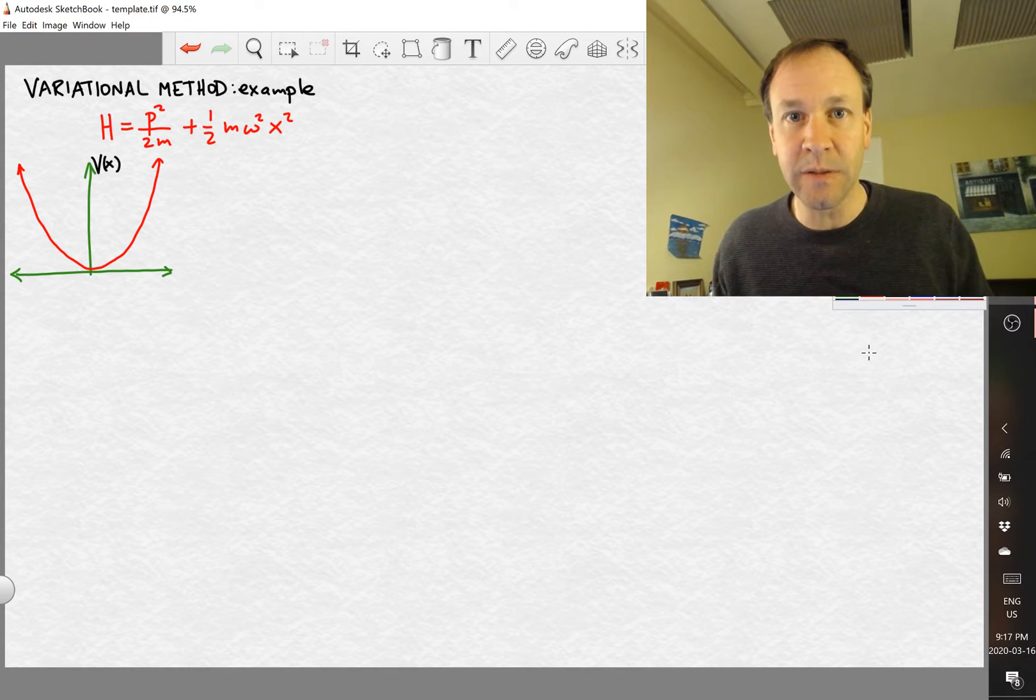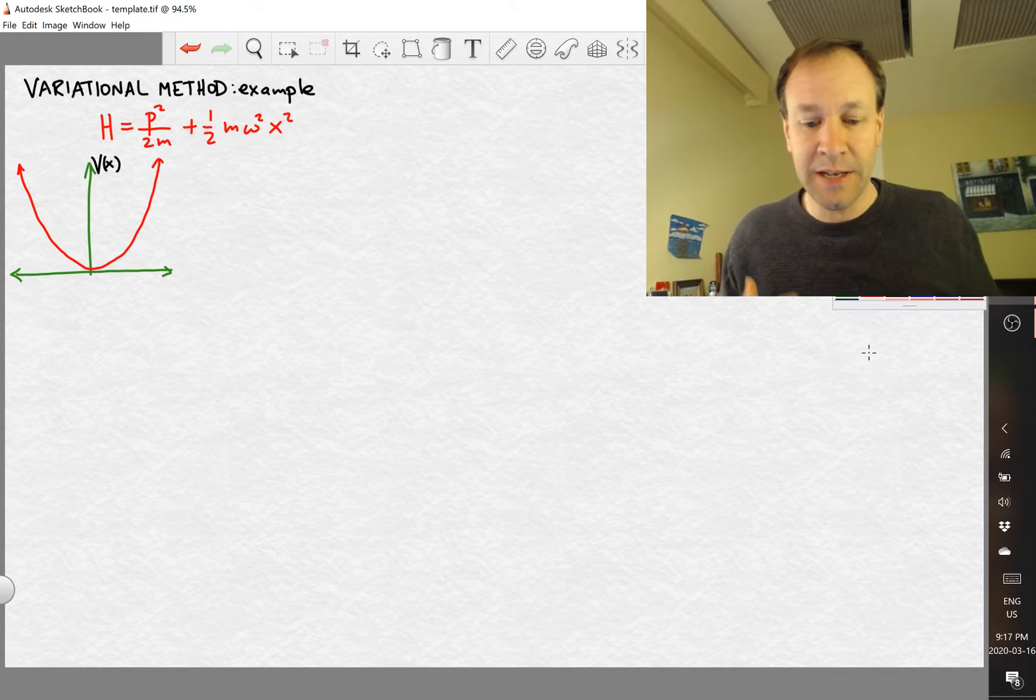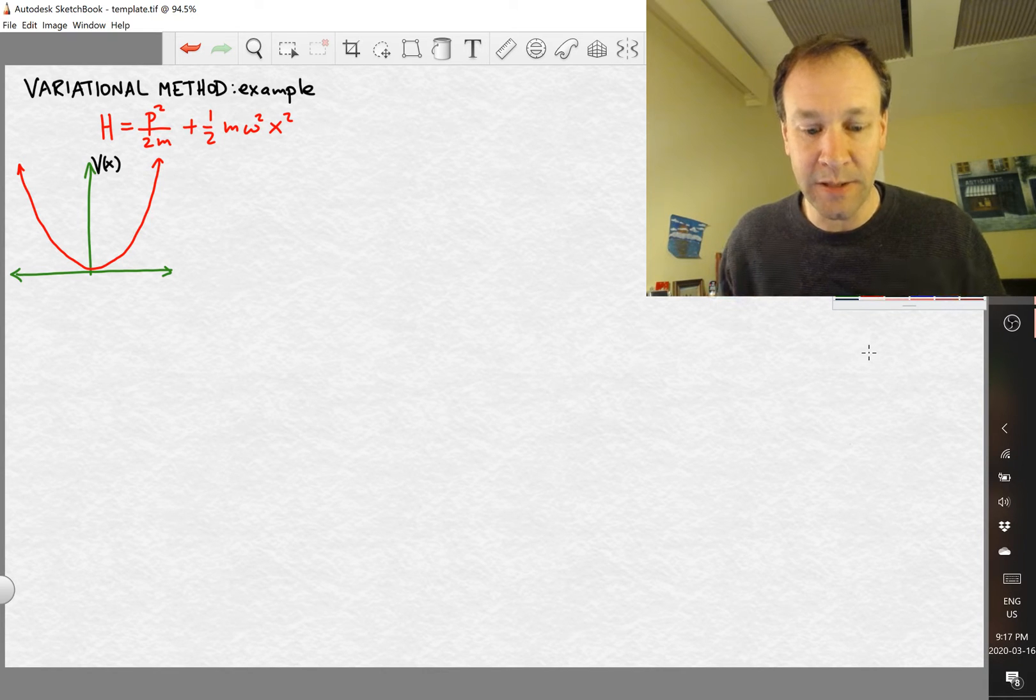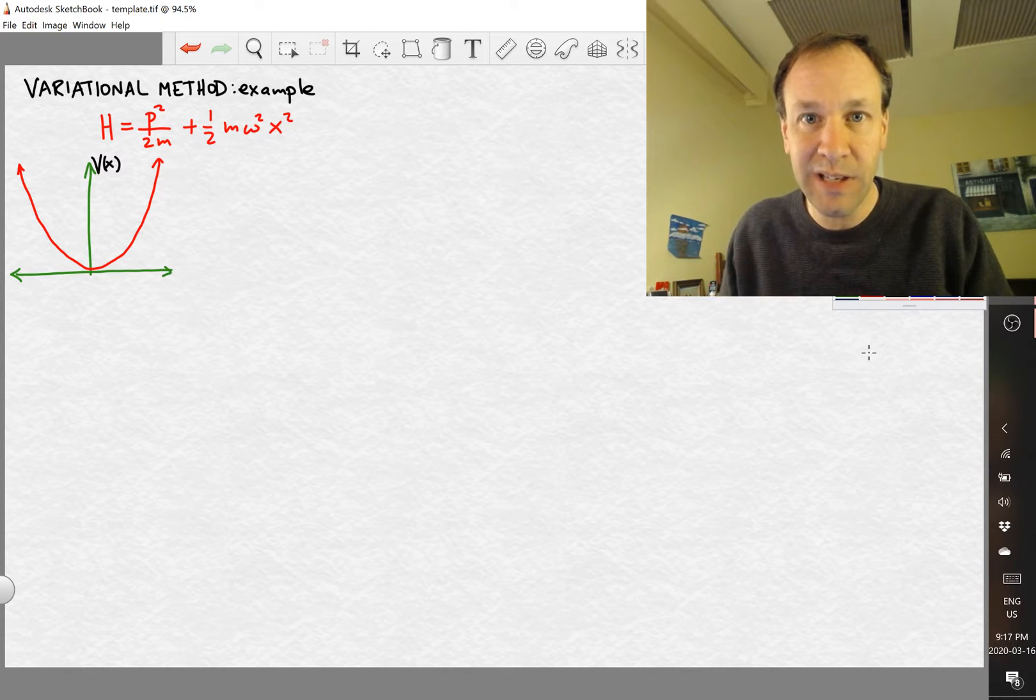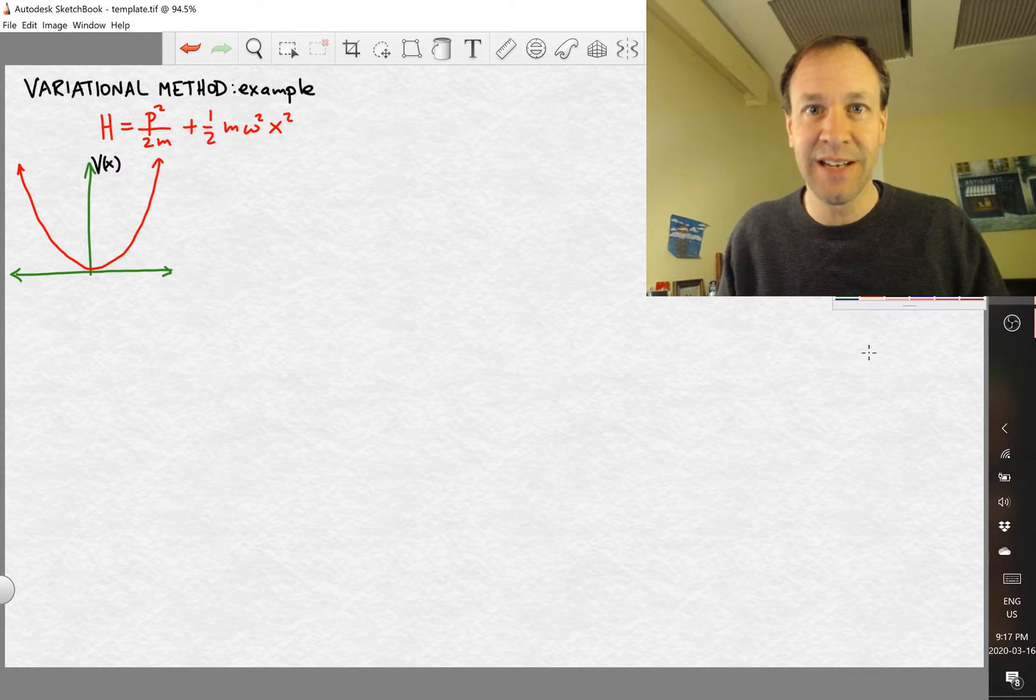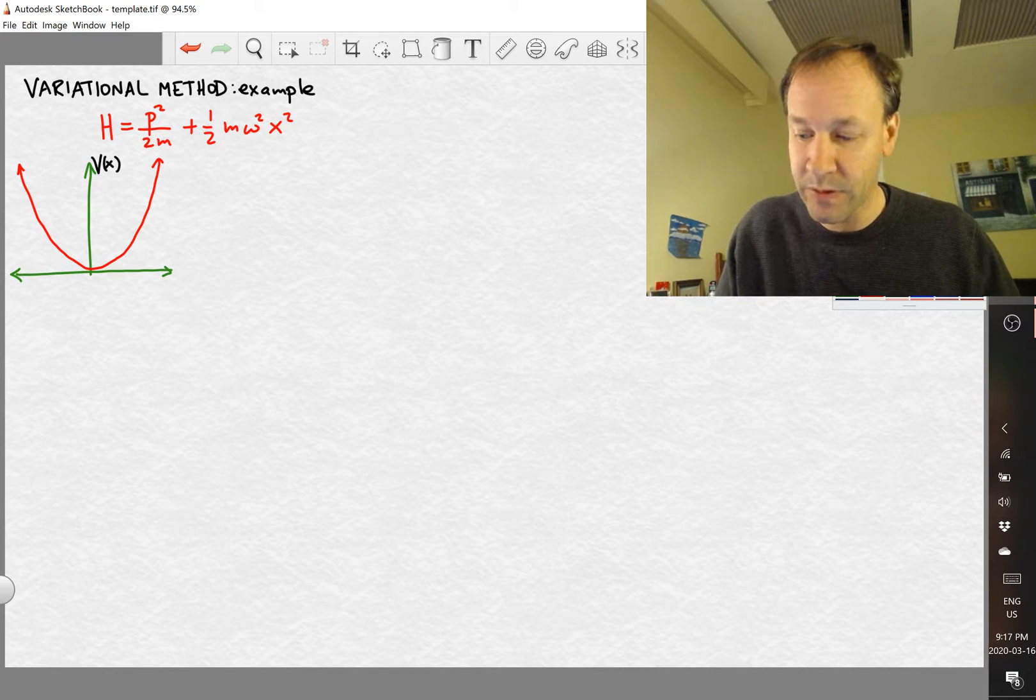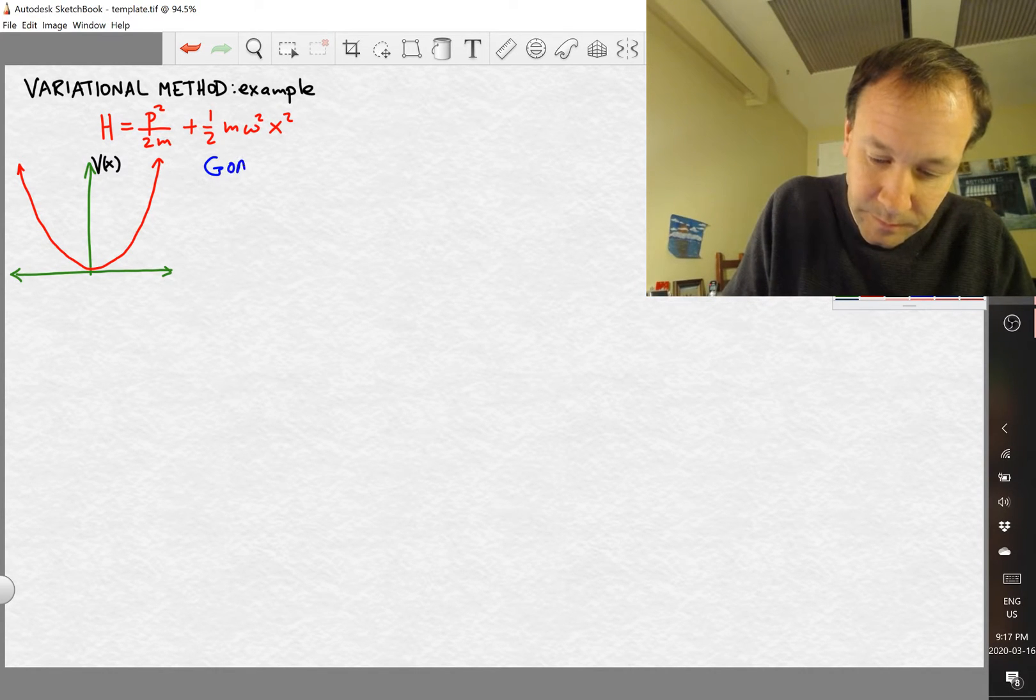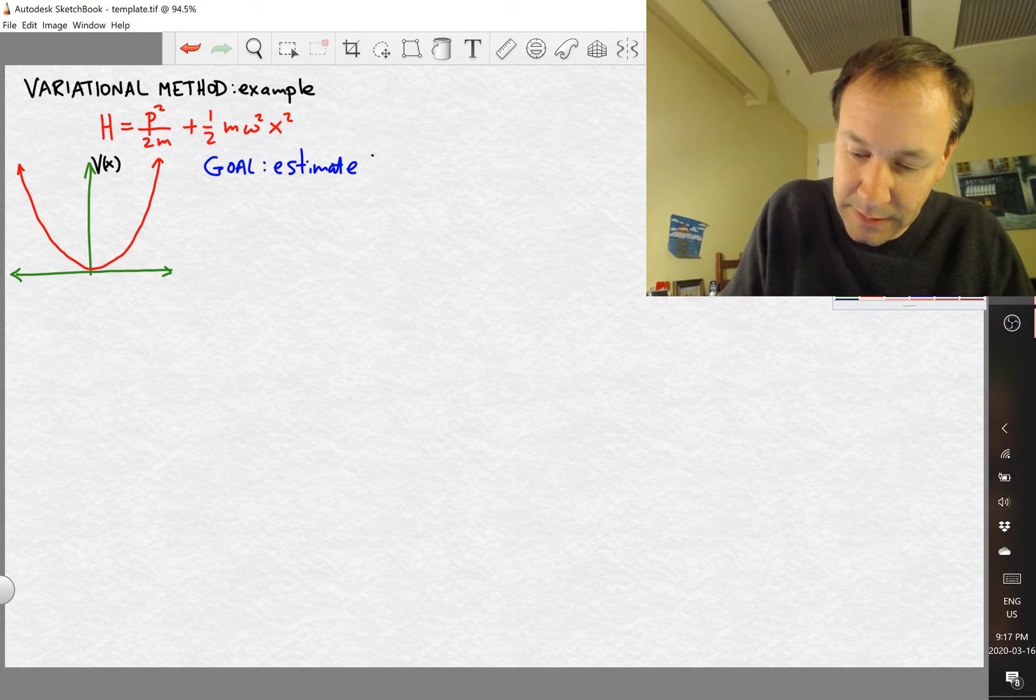All right, so let's get to our example of how to use the variational method. I've chosen a simple example to start with. We're going to think about a particle in one dimension described by the Hamiltonian p squared over 2m plus one half m omega squared x squared. So it's in a quadratic potential, and I've drawn the potential there. We want to estimate the ground state energy for this quantum system. So that's our goal - to estimate E₀.